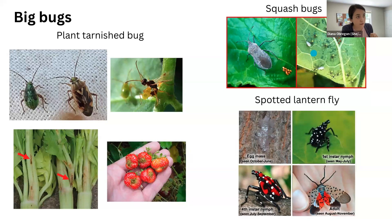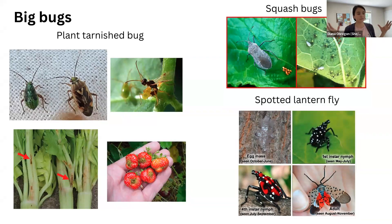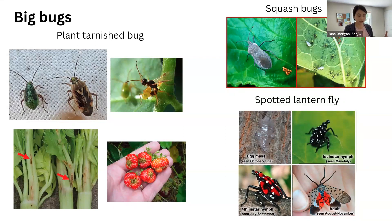I wanted to include the spotted lanternfly because it's an invasive species and we are all looking out to detect their populations. If you see them in your garden or in trees around you, you can go to our website and check if the county where you live already has a confirmed presence or not — and if not, you can report them. There's a task force in the state to control their populations because they can be very damaging to crops and different trees.